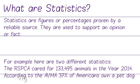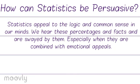It's really important that we include where we got the information from because it makes it more persuasive. Statistics appeal to the logic and common sense in our minds. We hear these percentages and facts and we're swayed naturally by them, especially when they're combined with emotional appeals and we know the organization where the information has come from.